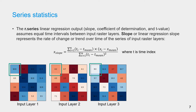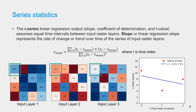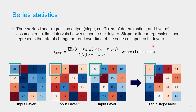The r.series tool can also compute linear regression output. It assumes equal time intervals between input raster layers. The slope, or linear regression slope, represents the rate of change. Here, t is the time index of the input rasters and x is the values of the corresponding pixels in the input rasters. For example, assuming input layer 1 is of time step 0, input layer 2 is of time step 1, and so on. The first pixel values can be plotted against time. The linear regression line shows a decreasing trend. The slope value is minus 1.4, which means this pixel value decreased about 1.4 pixel units per each time interval. Minus 1.4 will be the value of this pixel in the output slope layer.